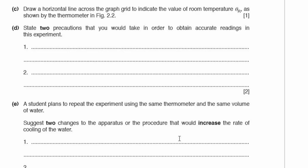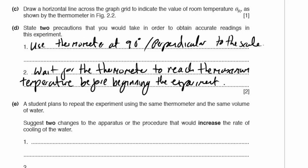Part D. State two precautions you would take in order to obtain accurate readings in this experiment. Number one, read the thermometer at 90 degrees, perpendicular to the scale. Second one, we touched on it earlier, wait for the thermometer to reach the maximum temperature before you begin.